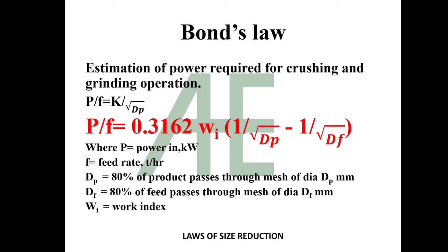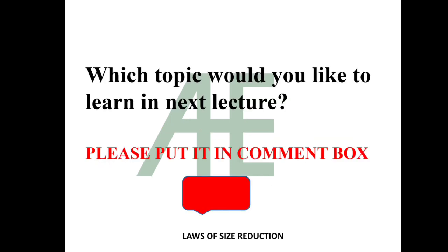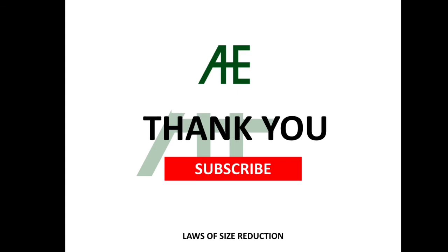f is feed rate tons per hour and p is power in kilowatt. So that's over. And I would like to ask you one question: which topic would you like to learn in next lecture? So please put it in the comment box. We will try to take that lecture in next video. Thank you for watching our video. For more such videos, don't forget to subscribe to our channel.